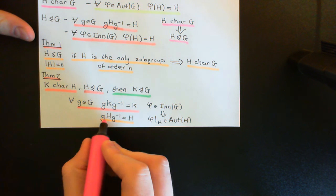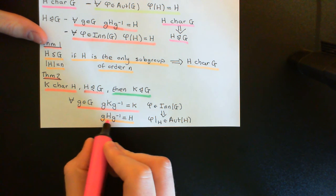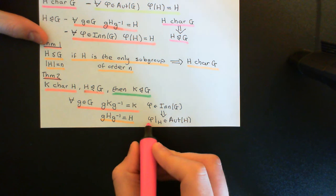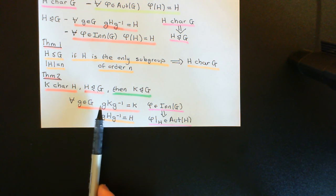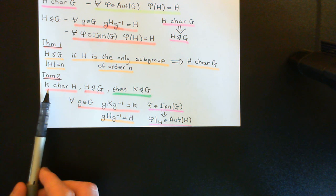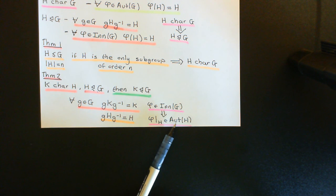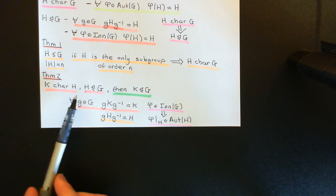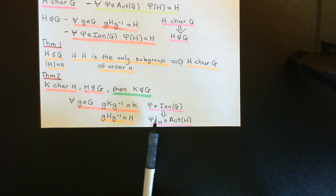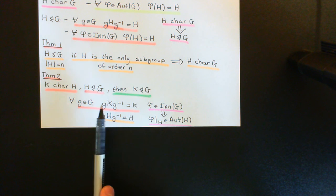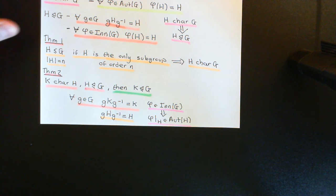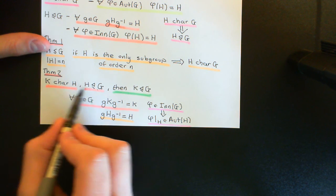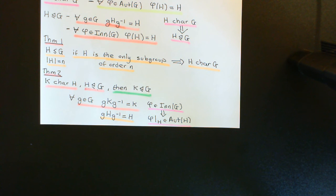Note it's not necessarily an inner automorphism of H, because you might be conjugating by elements of G that are outside of H and therefore wouldn't count as inner automorphisms of H. But why can we conclude that restricting this map further down to the subgroup K fixes K? Because K is characteristic in H — so whatever automorphism of H you have, acting it on K just gives K back. This conjugation by g is an automorphism of H, and therefore restricting it to K fixes K, since K is characteristic in H. So any inner automorphism of G fixes K, and therefore K is normal inside G.